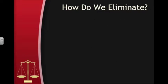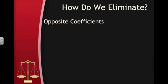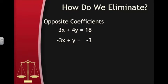Now that we know how to add two equations together, we need to be able to do it in a way that eliminates one of the variables. The key to this whole process is to get one of the variables to have opposite coefficients in the two equations. If we look at another system — 3x plus 4y equals 18 and negative 3x plus y equals negative 3 — we can see what this means.